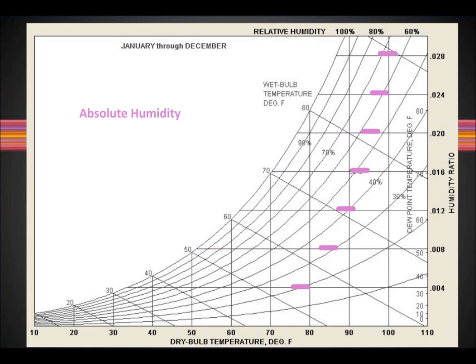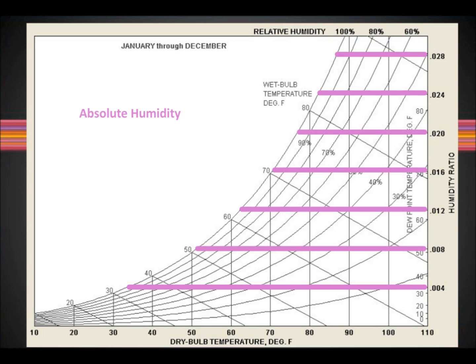Absolute humidity is the amount of moisture in the air as measured in pounds of water per pound of dry air. It is represented by the horizontal lines on the graph. Points higher up on the graph mean that there is more moisture as compared to those on the lower part of the graph.